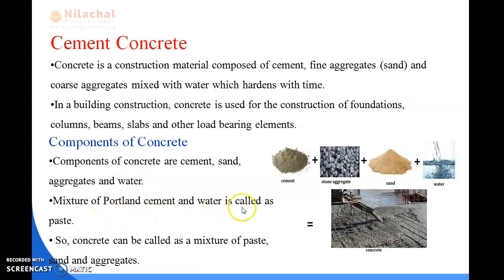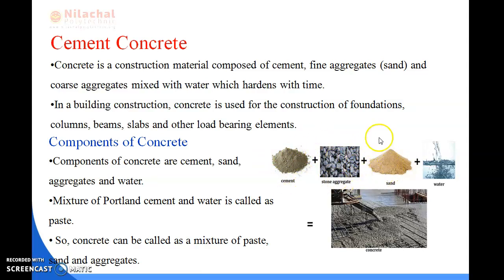A mixture of Portland cement and water is called paste. So concrete can be called a mixture of paste, sand, and aggregates. As shown in the diagram, the components added are cement, fine aggregates or stone aggregates, and some quantity of water. These components are combined to make a paste — that is what we call concrete.